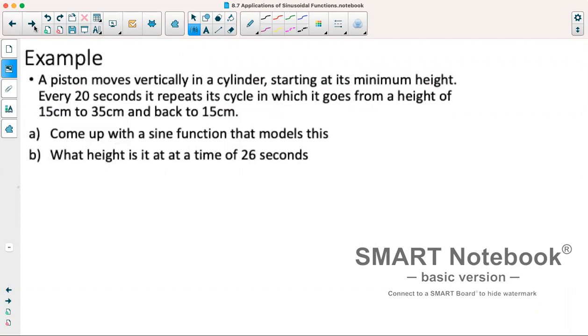For example: a piston moves vertically in a cylinder, starting at its minimum height. Every 20 seconds it repeats its cycle in which it goes from a height of 15 centimeters to 35 centimeters and back to 15 centimeters. We want to come up with a sine function that models this and we only know what height it is at at a time of 26 seconds.